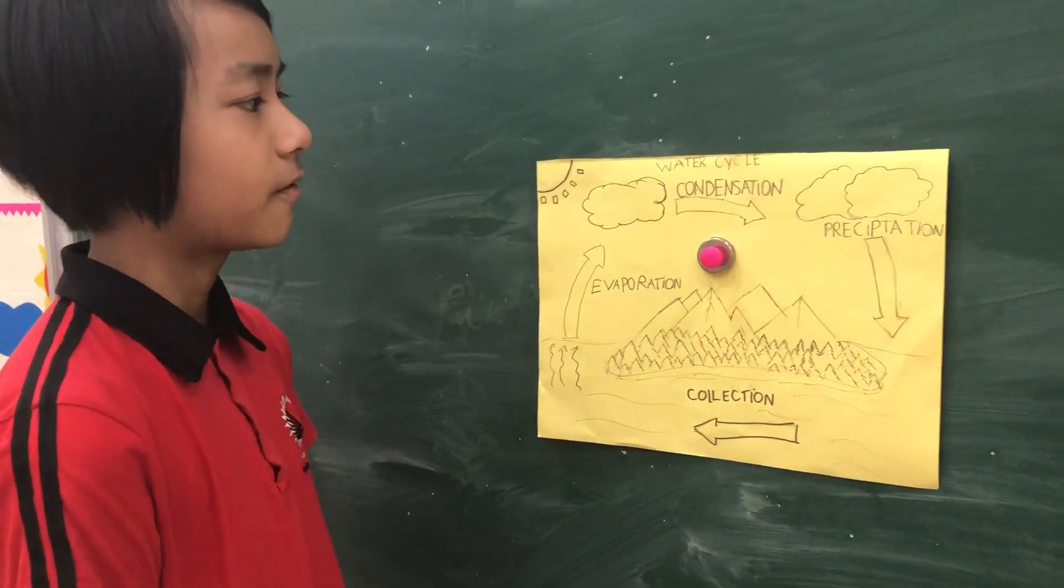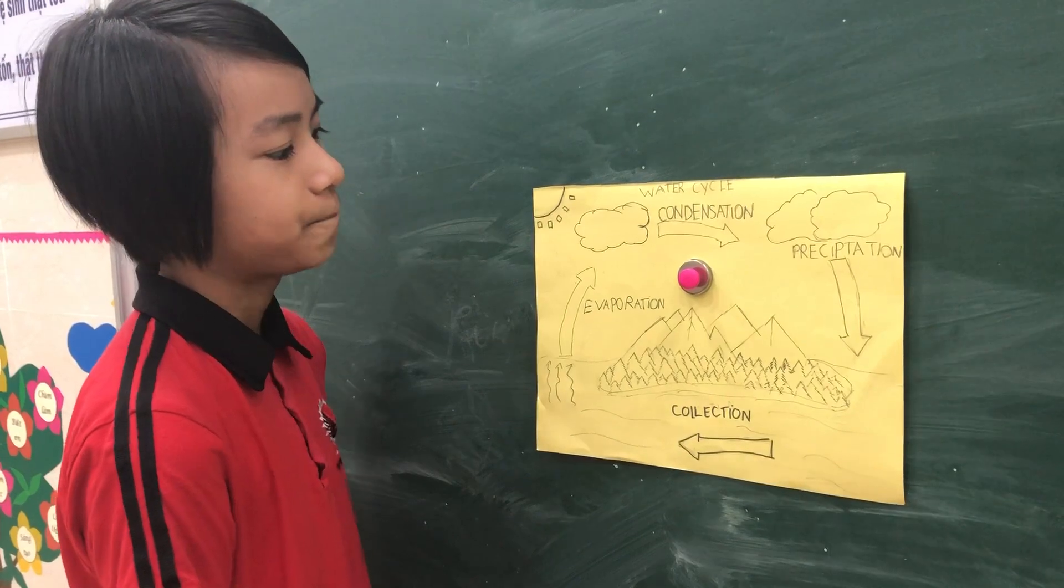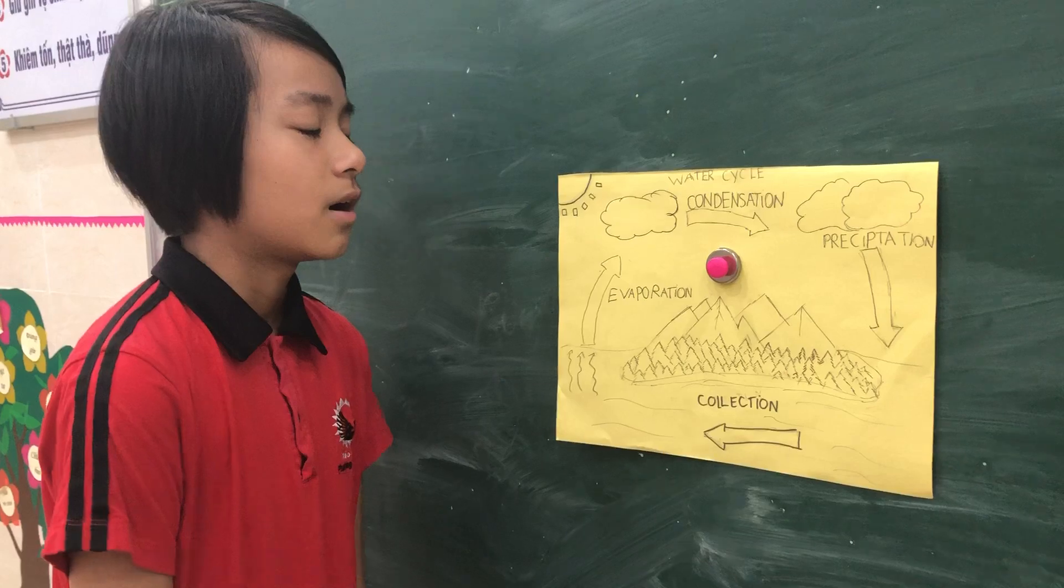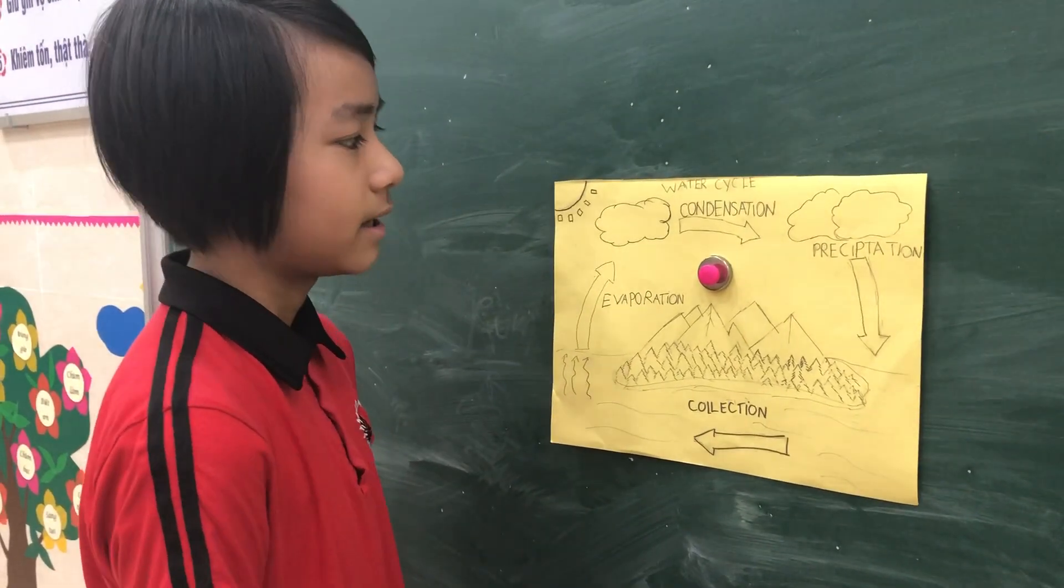The water will rise up in the air, cool down, and become a lot of water droplets. The water droplets come together and make clouds.